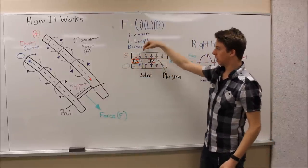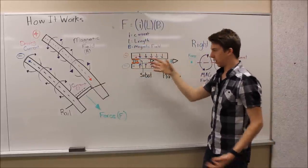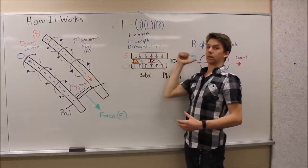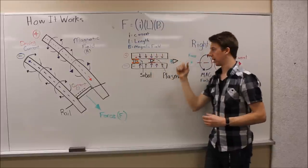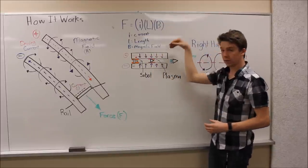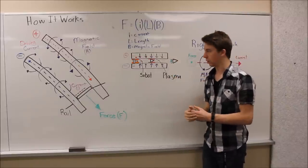As it's moving along, our sabot, or plasma, depending on what is used, completes the circuit and shoots the projectile out of the gun. Once it is no longer in the gun, current stops flowing through because our circuit is no longer complete.